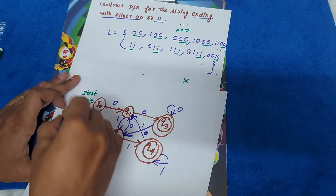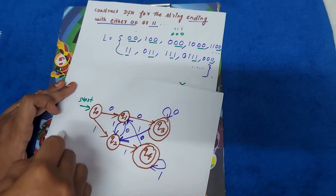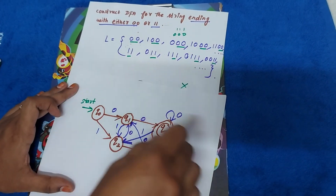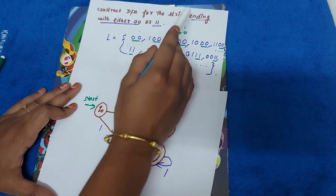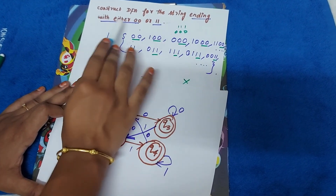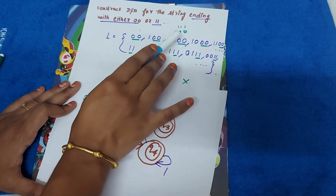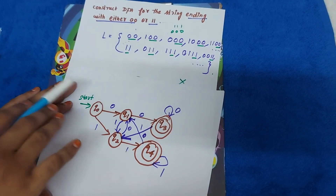This is our finite DFA automata for the given question — strings ending with either zero-zero or one-one. Thank you.